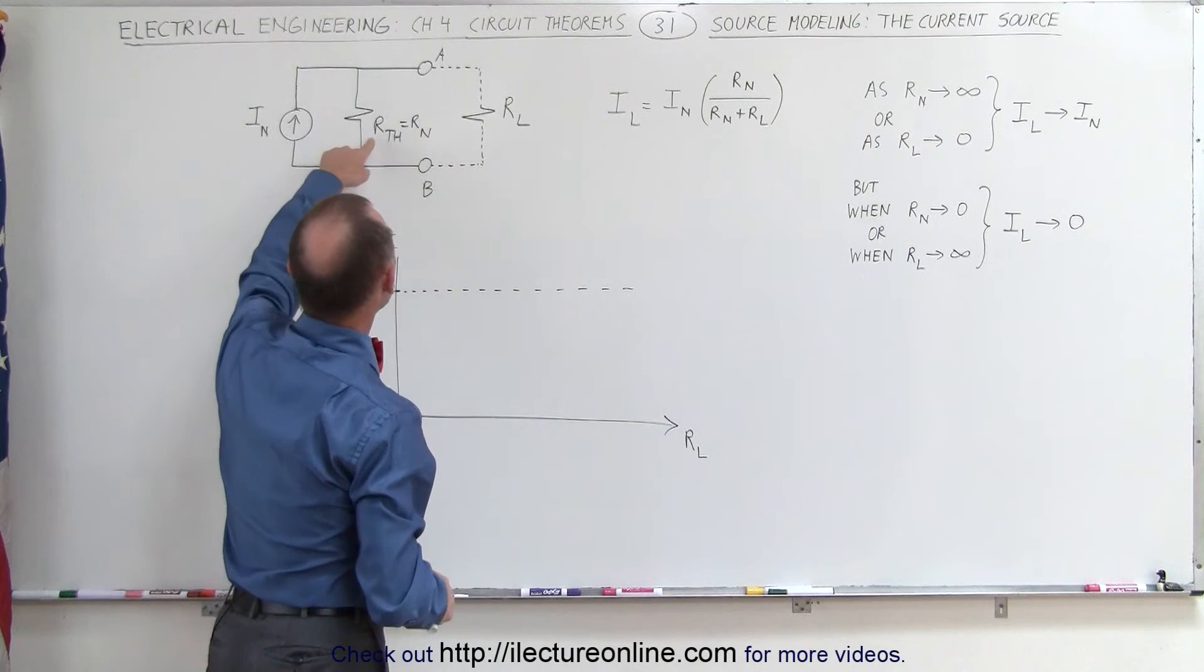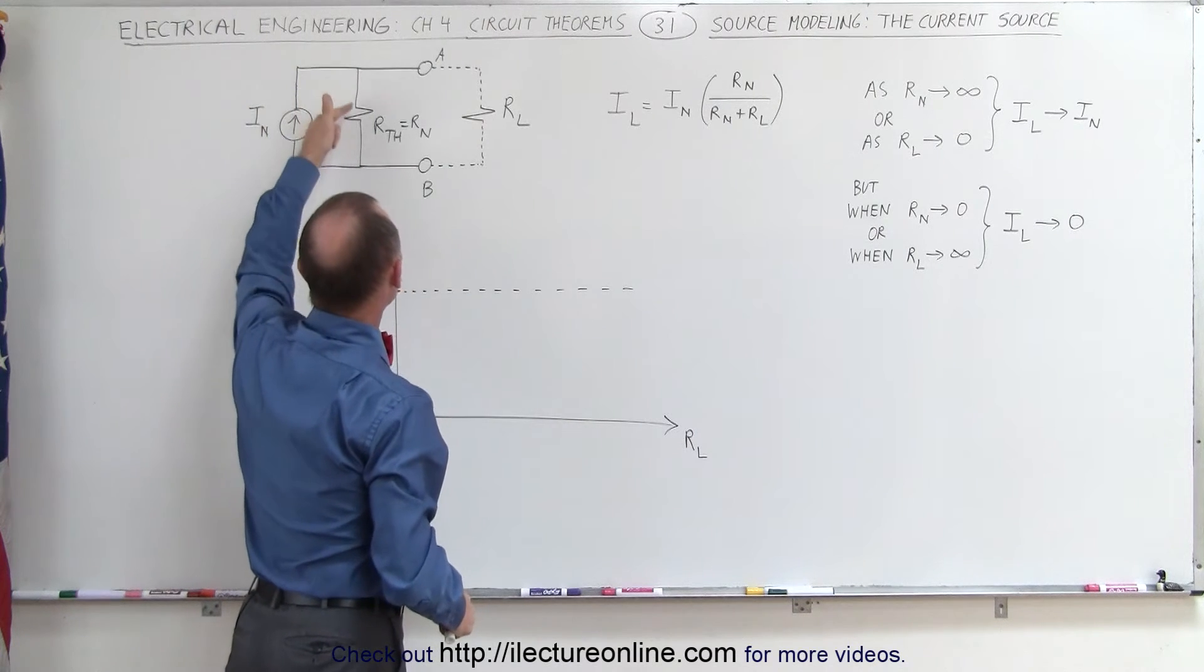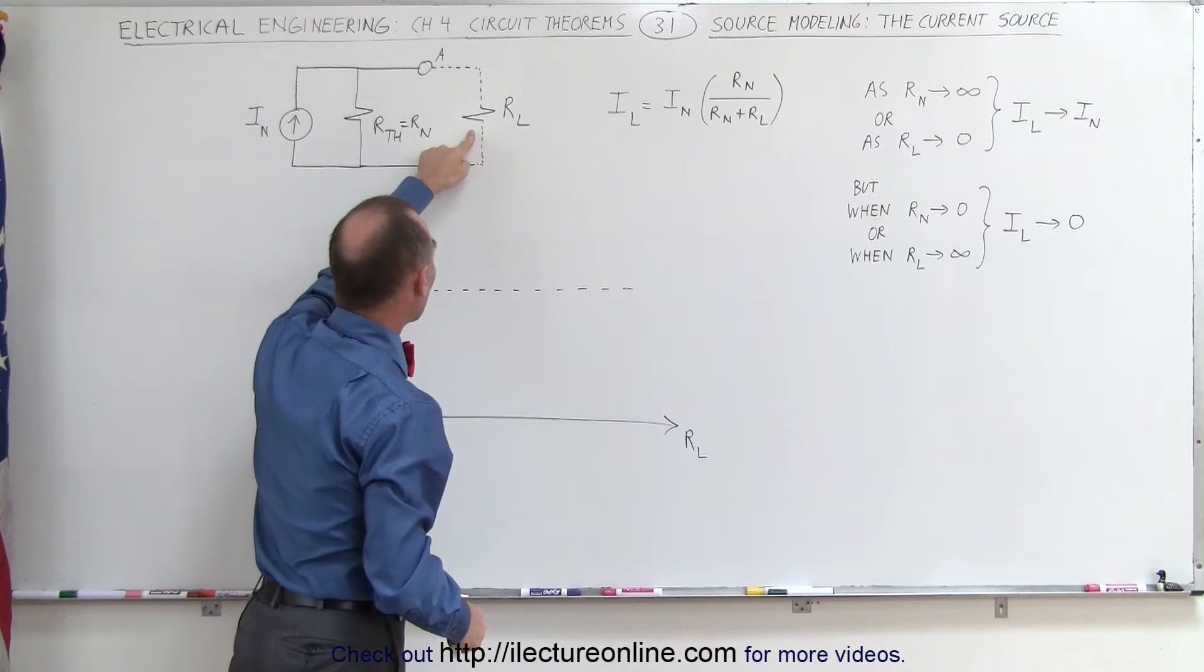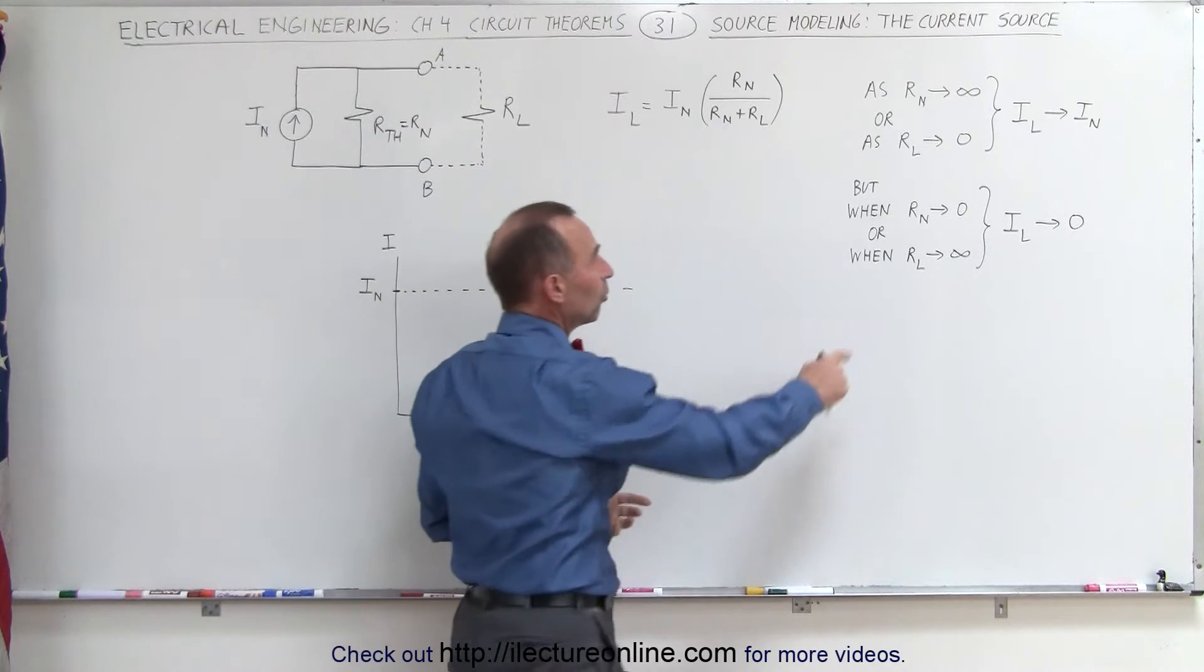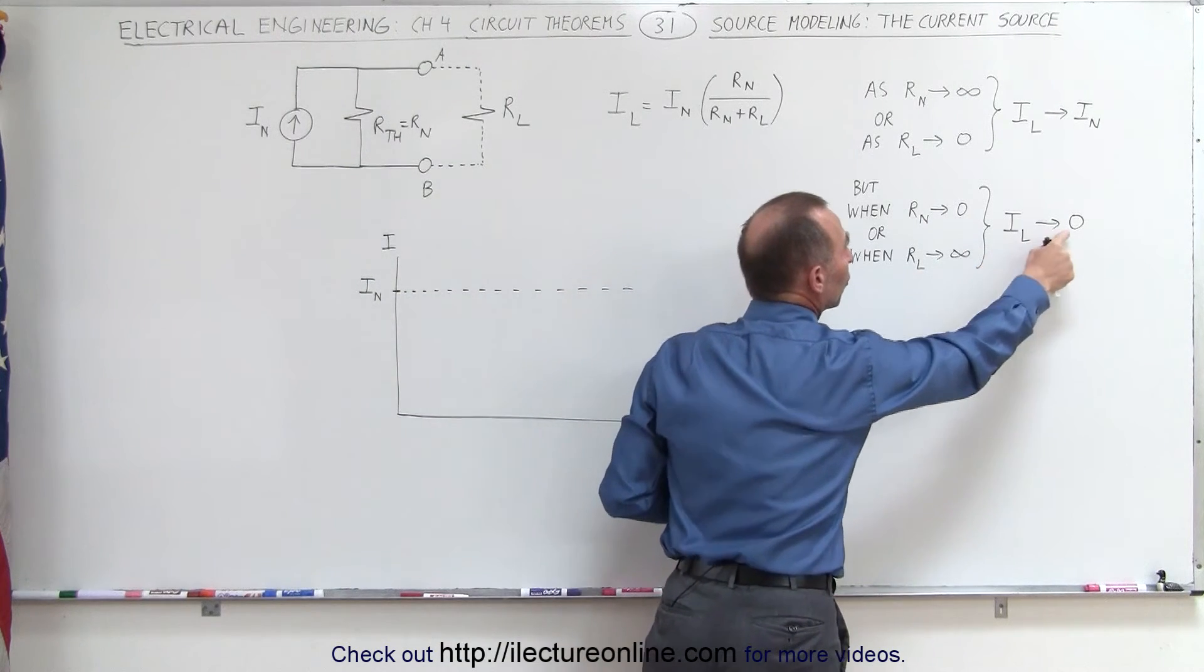However, if the internal resistance becomes very small, then the current will tend to go through the internal resistance rather than to the load resistor. Or if the load resistor becomes very large, then the current through the load resistor goes to zero.